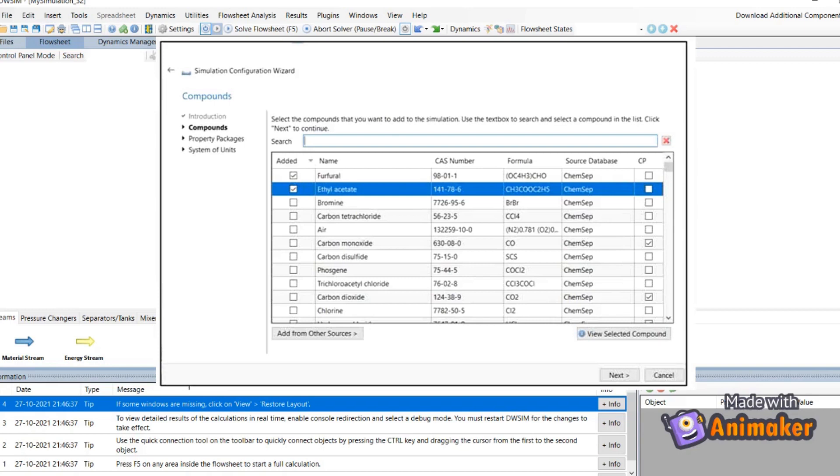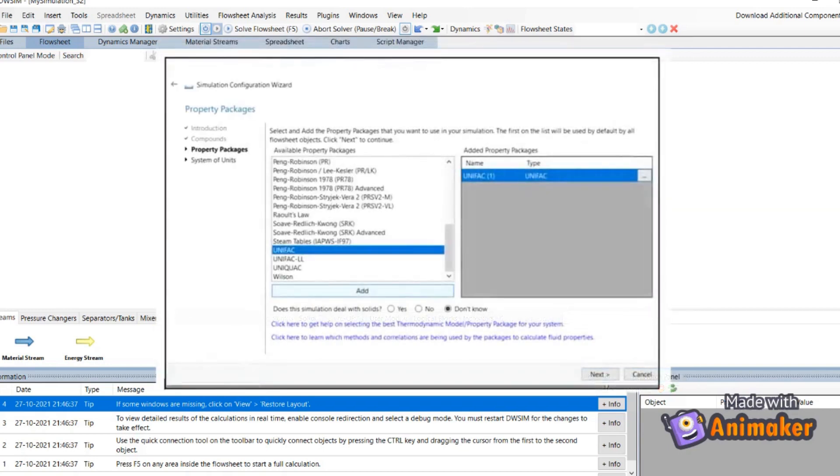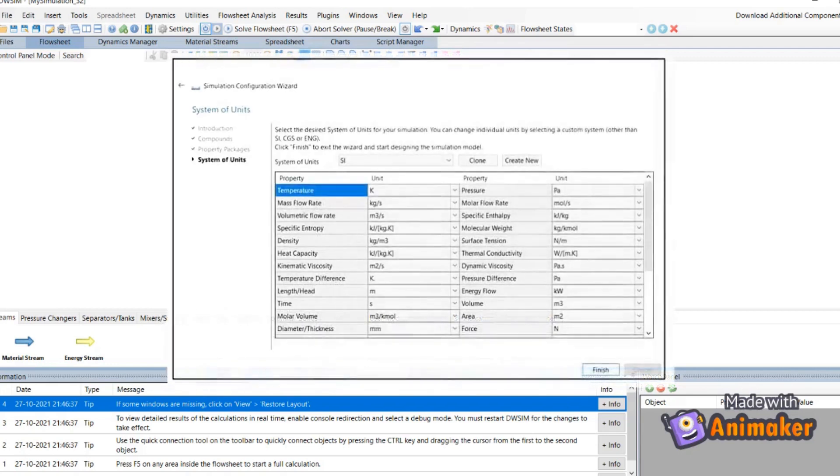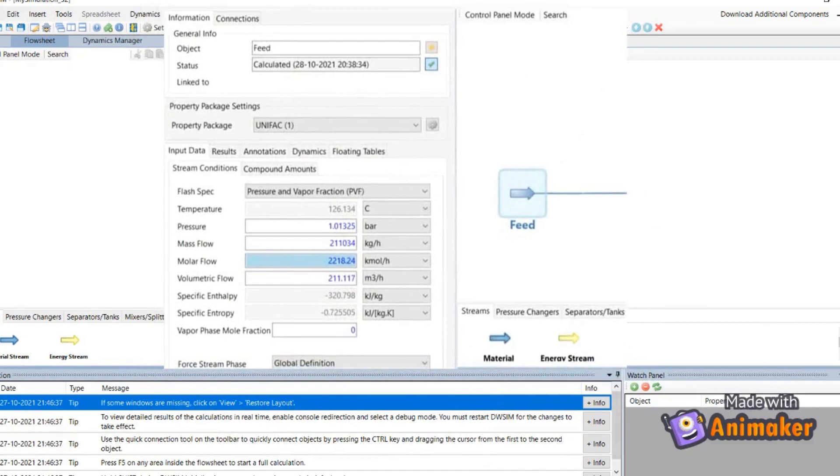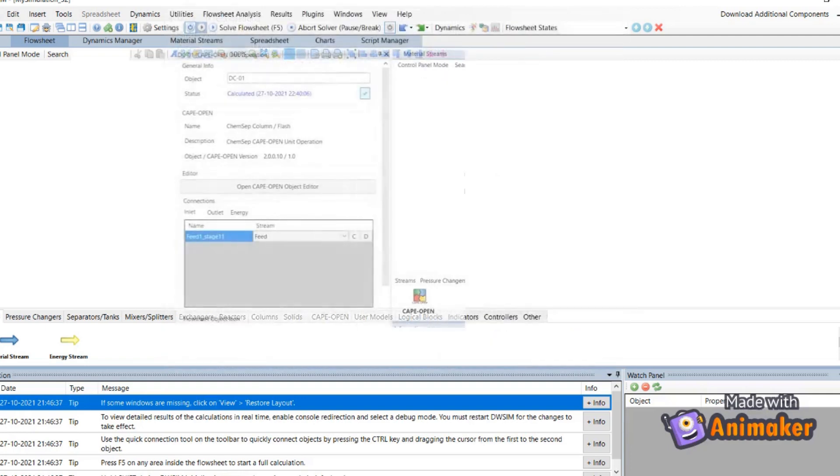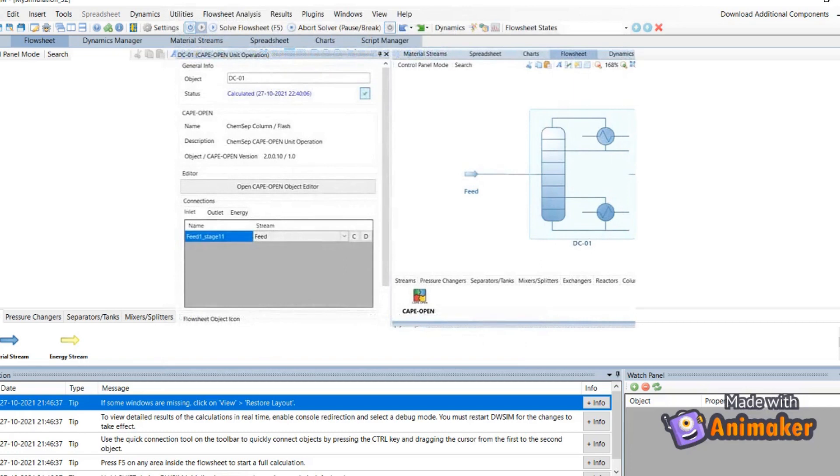Here, we select UNIFAC as the property packages and the system of unit is set to SI. Let us now introduce one feed stream and change the appropriate values of compound amount and stream conditions. The flash spec is pressure and vapor fraction and change the molar flow.